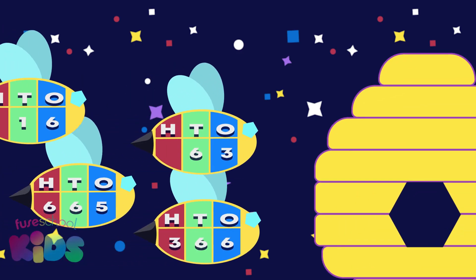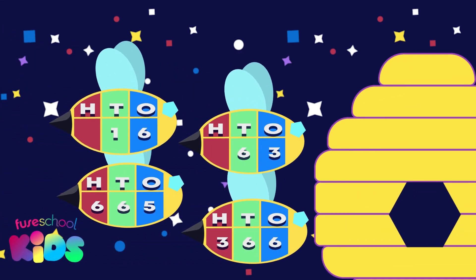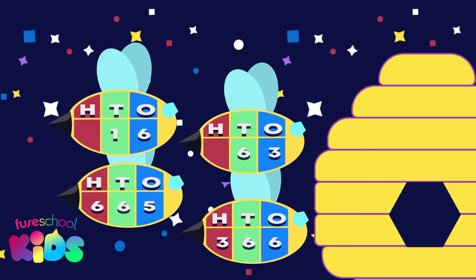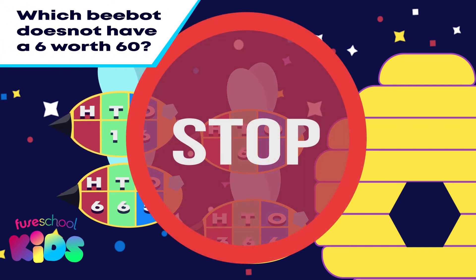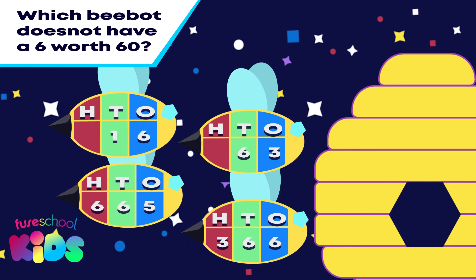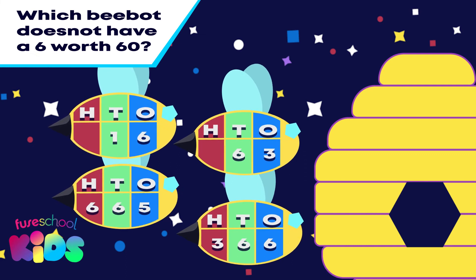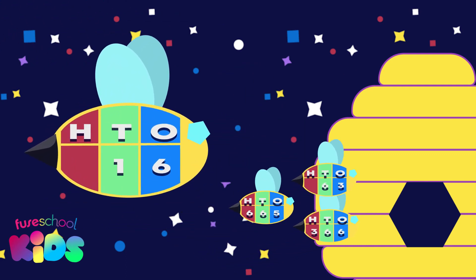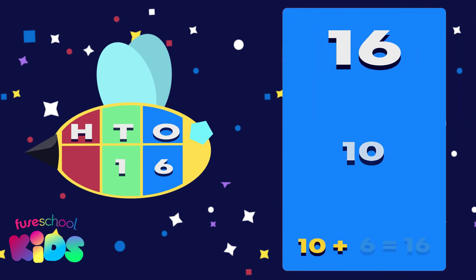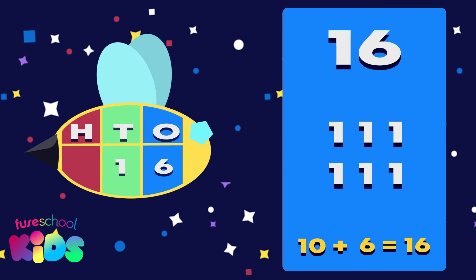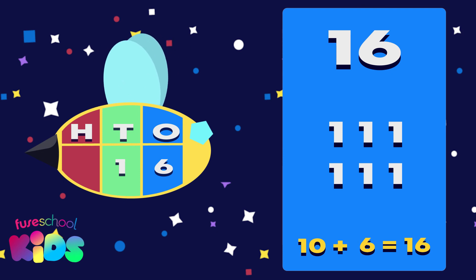Did you know only beehive bots with a 6 worth 60 can go into the golden hive? Which of these beehive bots cannot go inside? This bee bot cannot go in. This bee is made up of 1 ten and 6 ones, which is worth 16, not 60.